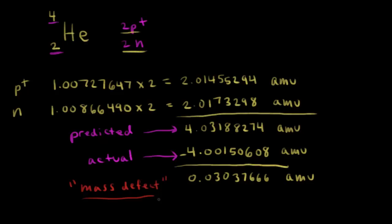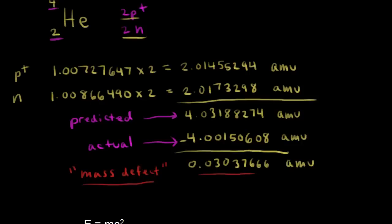It looks like we lost some mass here. What's happened is that mass — the mass defect — was converted into energy when the nucleus was formed. We can calculate how much energy according to Einstein's famous equation which relates energy and mass. This is the one that most people know: E equals MC squared.